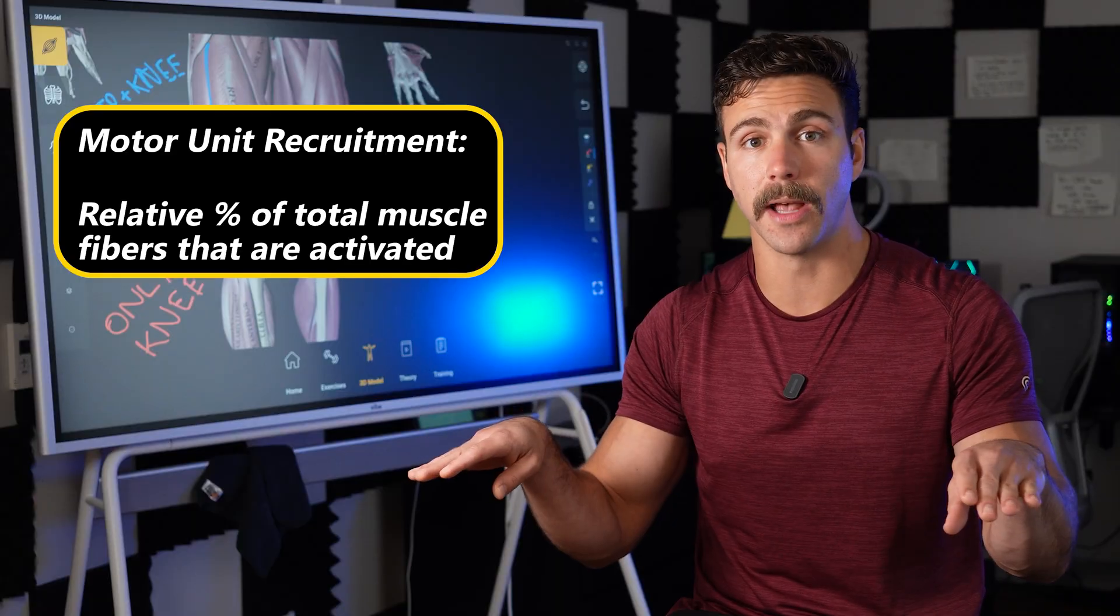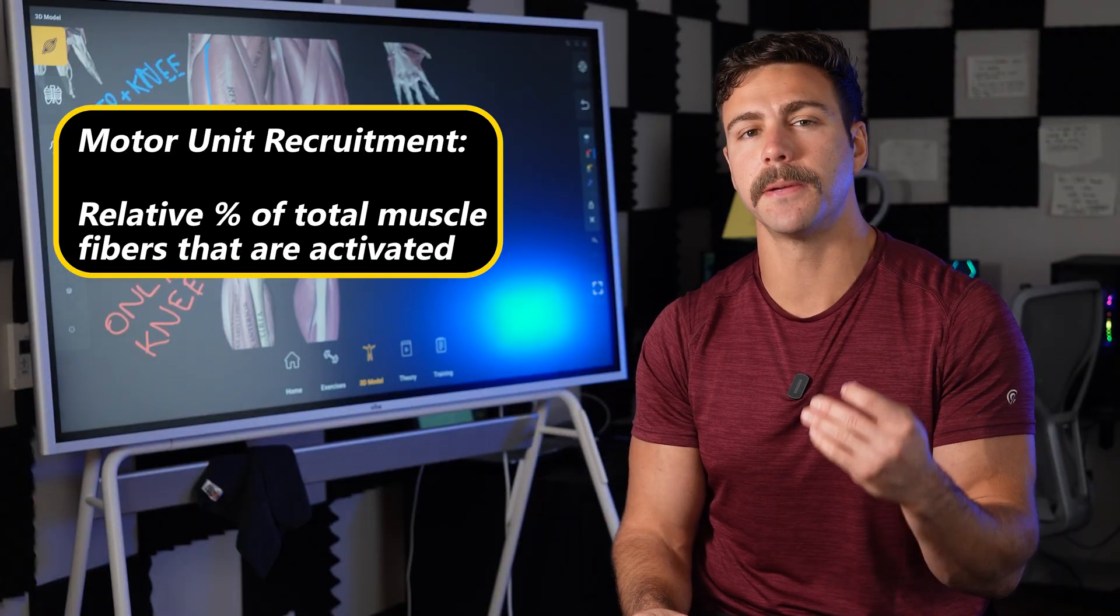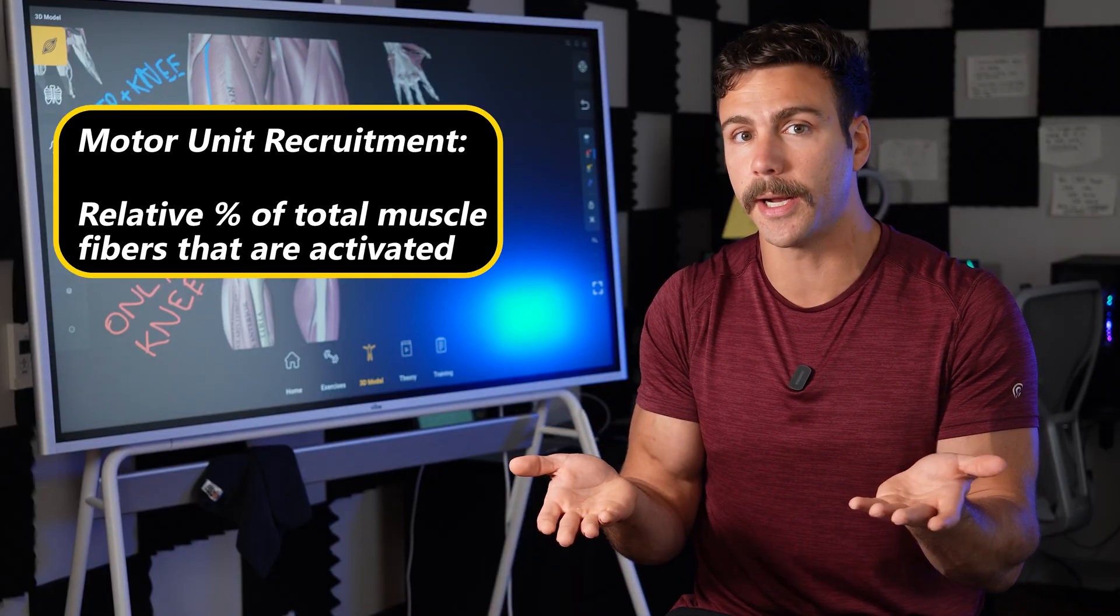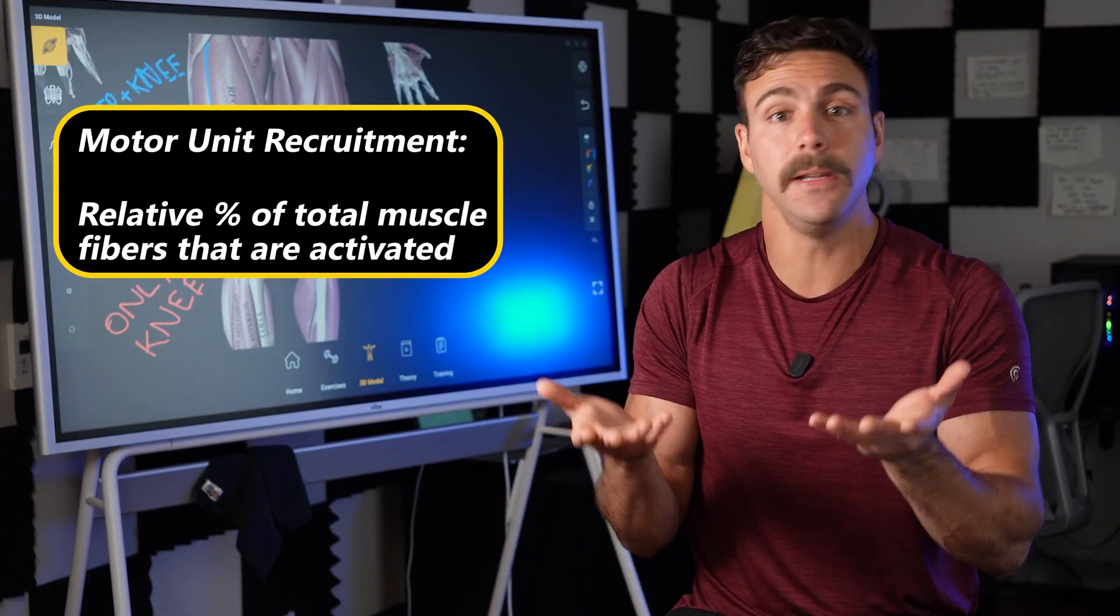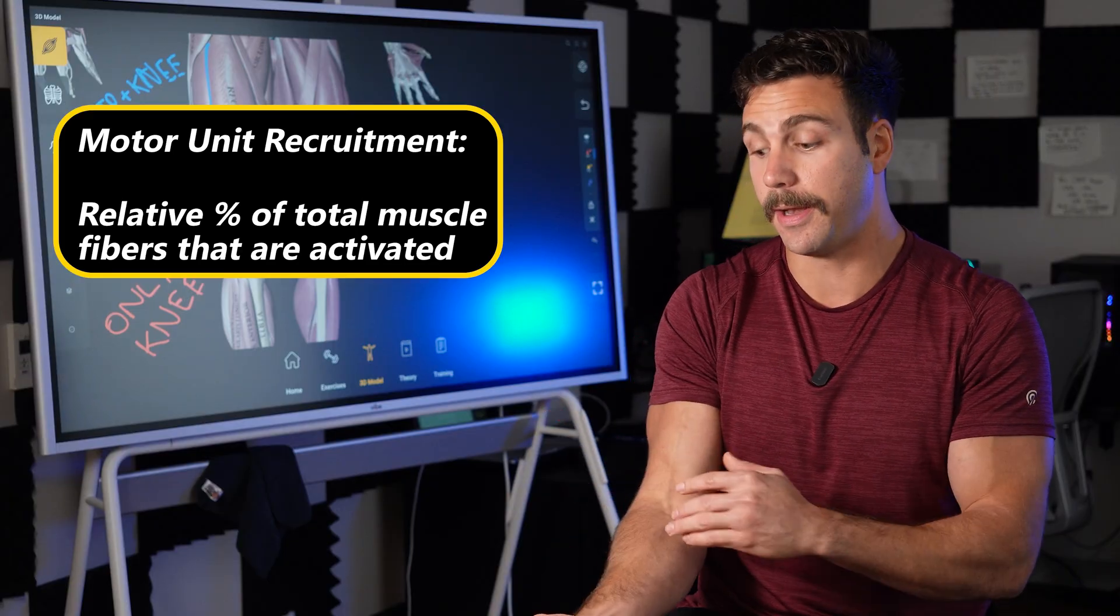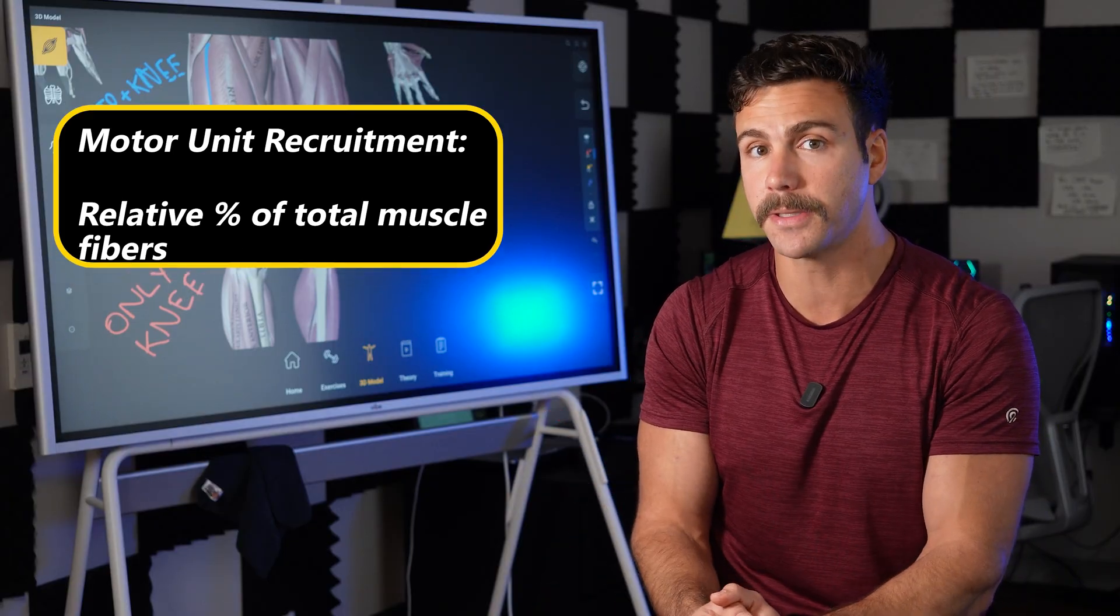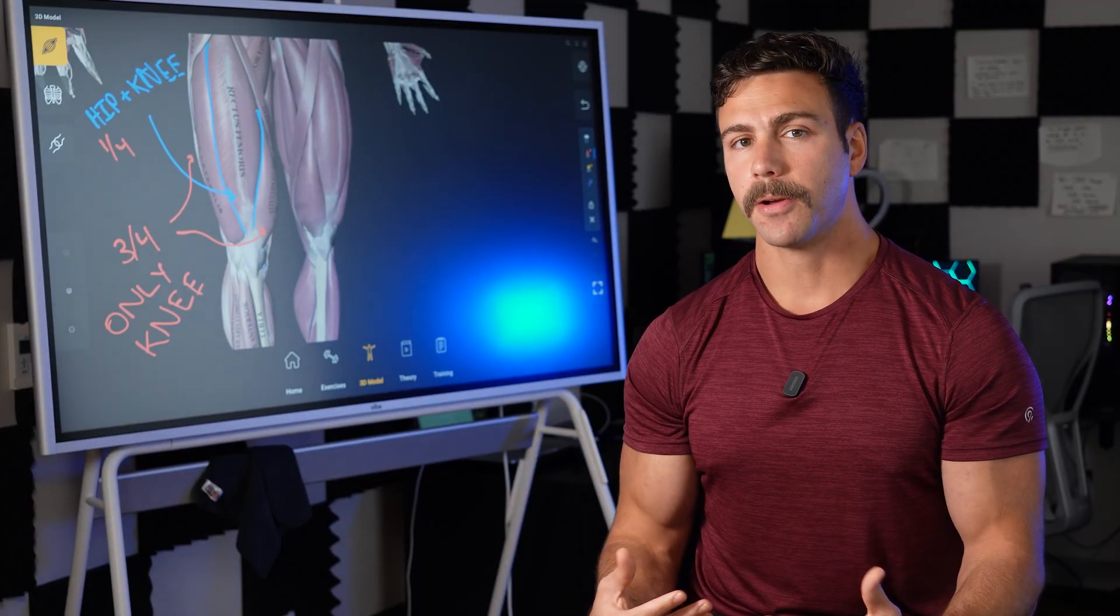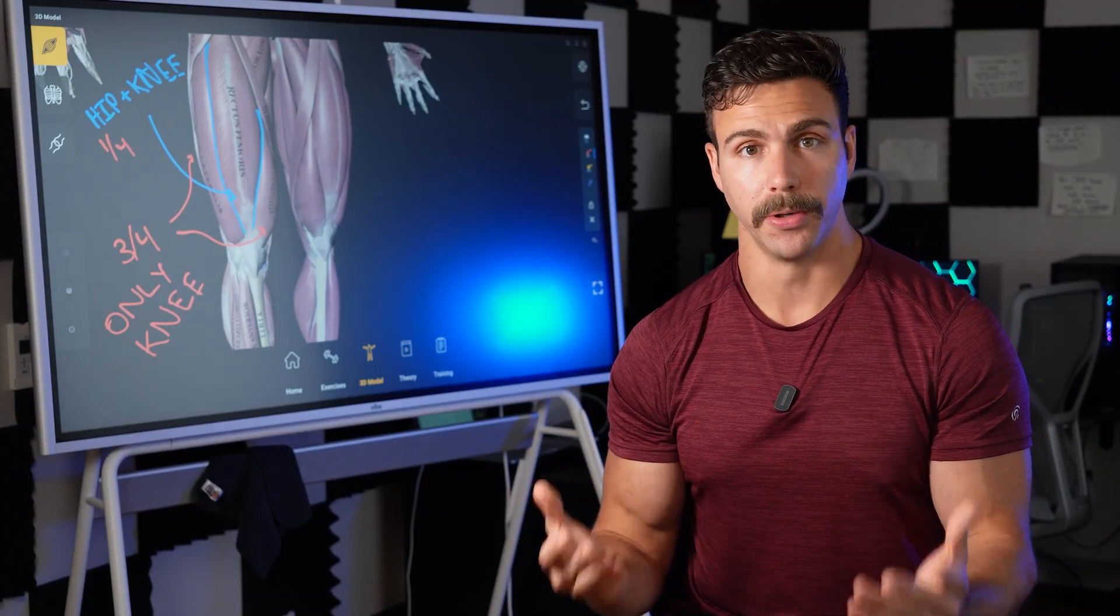it can be described as a percentage of your total muscle fibers that are actually turned on and contracting. So if I had 90% motor unit recruitment, then 90% of all of my muscle fibers, let's say in my biceps, would be turned on. Now this begs the question, what is a motor unit?